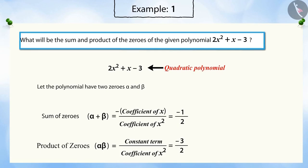So, in this way, we can find the sum and product of zeros of the given polynomial. Let us see another example.